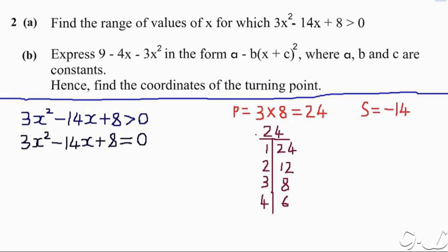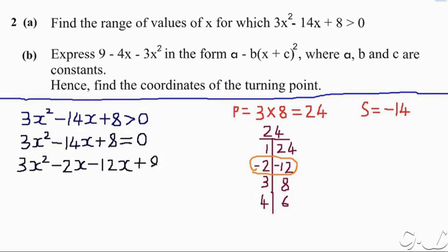When you add 2 and 12 it gives 14, and when you multiply 2 and 12 it gives 24. So we can make those two numbers negative: negative 2 and negative 12. Because negative 2 multiplied by negative 12 gives positive 24, and negative 2 plus negative 12 gives negative 14. Those are the numbers we are looking for. So we write 3x squared minus 2x minus 12x plus 8, equal to 0.